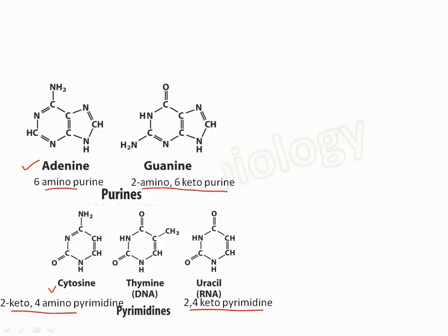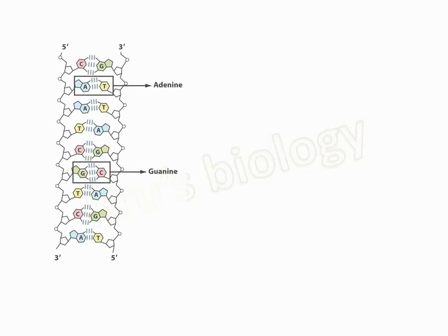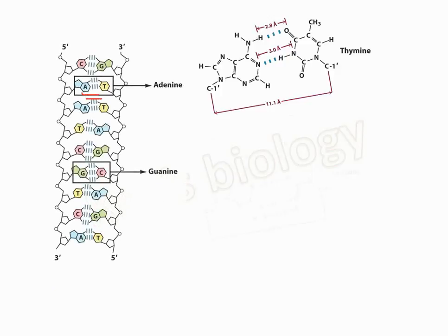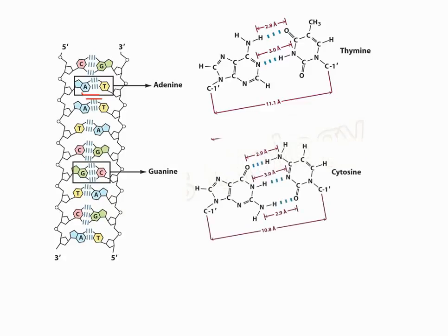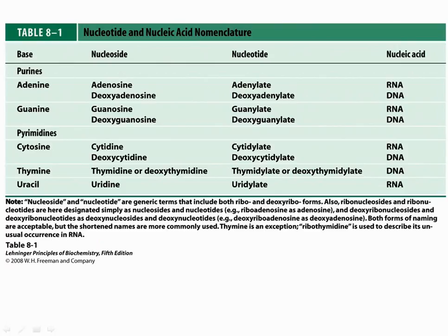Thymine is the same as uracil except for the presence of a methyl group at the fifth carbon. Adenine joins with thymine in DNA or uracil in RNA with two hydrogen bonds. Guanine joins with cytosine by three hydrogen bonds. This table shows the nomenclature of nucleotides and nucleic acids.